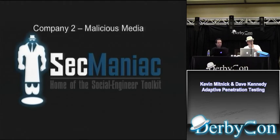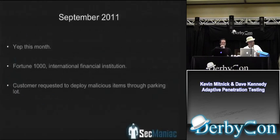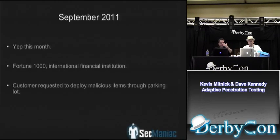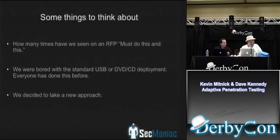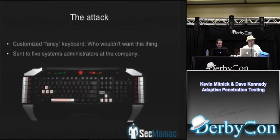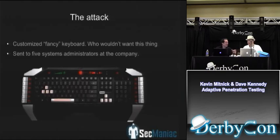This next one is Company Two: malicious media. This actually happened this month. It was a Fortune 1000 company and the customer requested we deploy malicious items to the parking lot. We've gotten those assessments before - drop malicious USBs or DVDs in the parking lot and see how many people pick them up. But we wanted to do something different because those are getting boring. So I scoured the internet for the most expensive, fancy keyboard I could find - an IT person's dream with lights and everything. We sent this modified keyboard to five IT folks in the actual company.